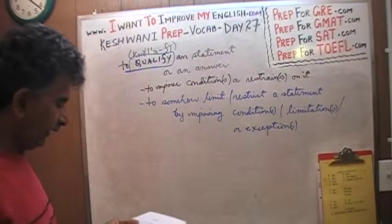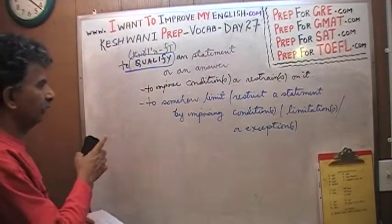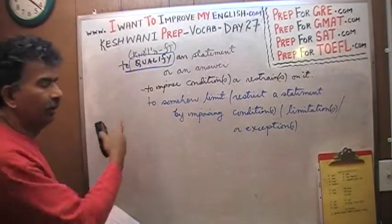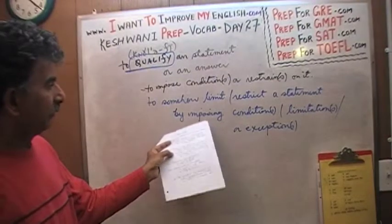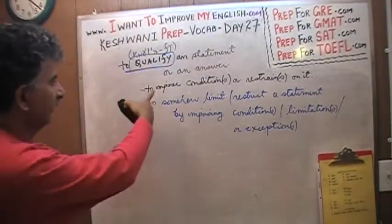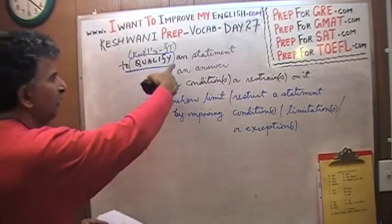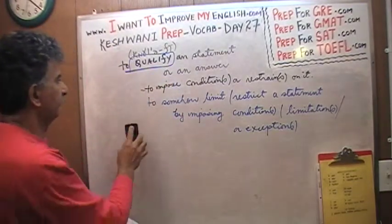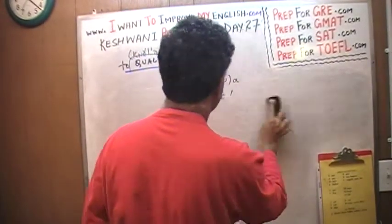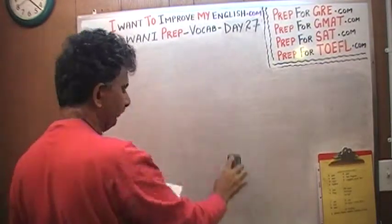The next word is equivocate — which is a synonym of qualify. It means to somehow limit or restrict a statement by imposing conditions, some sort of limitations, or exceptions. To qualify your answer, to qualify your statement.